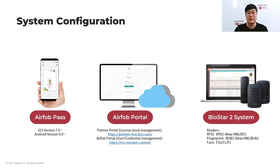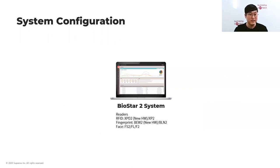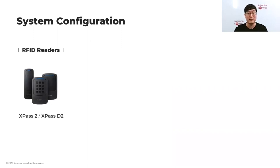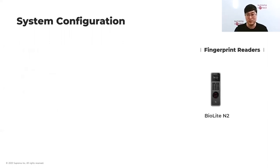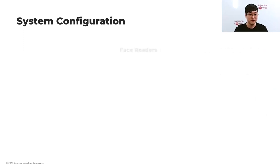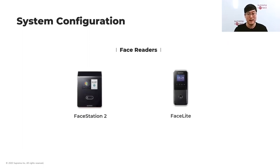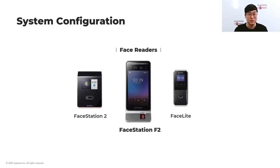The BioStar 2 system works as an access control system with AirFob. BioStar 2 has been integrated with the AirFob Portal, so by just using BioStar 2 you can issue or manage the mobile access card. Compatible RFID readers include XPass 2 and D2 — for D2, only the new mobile-ready hardware version is supported. Among fingerprint readers, BioLite N2 supports mobile access, and the new BioLite W2 now supports BLE, so both fully support mobile access.